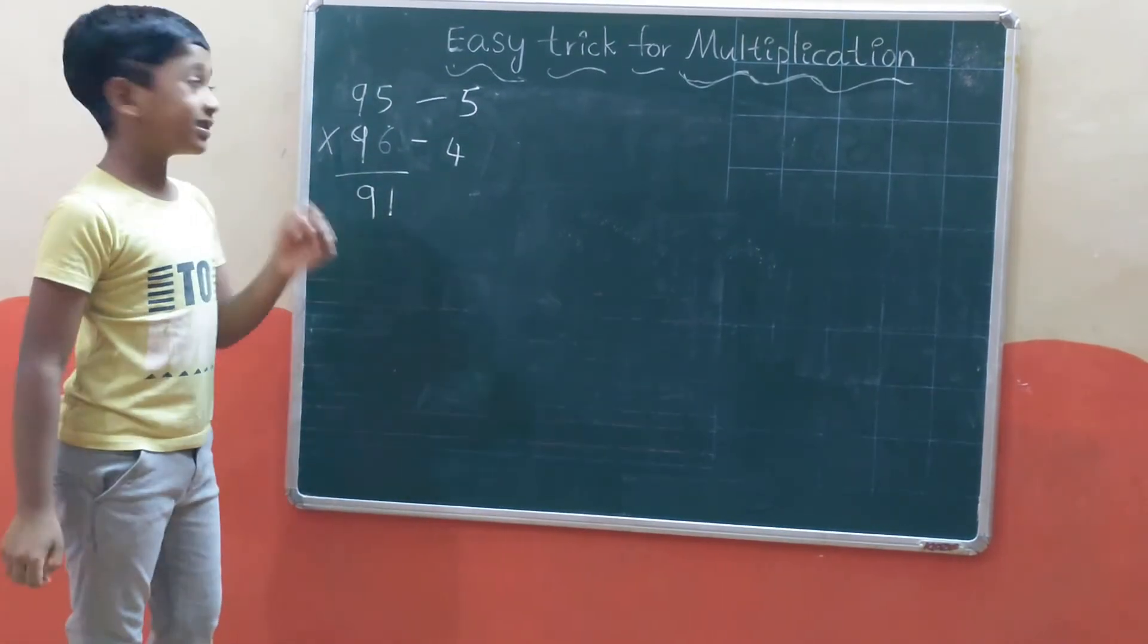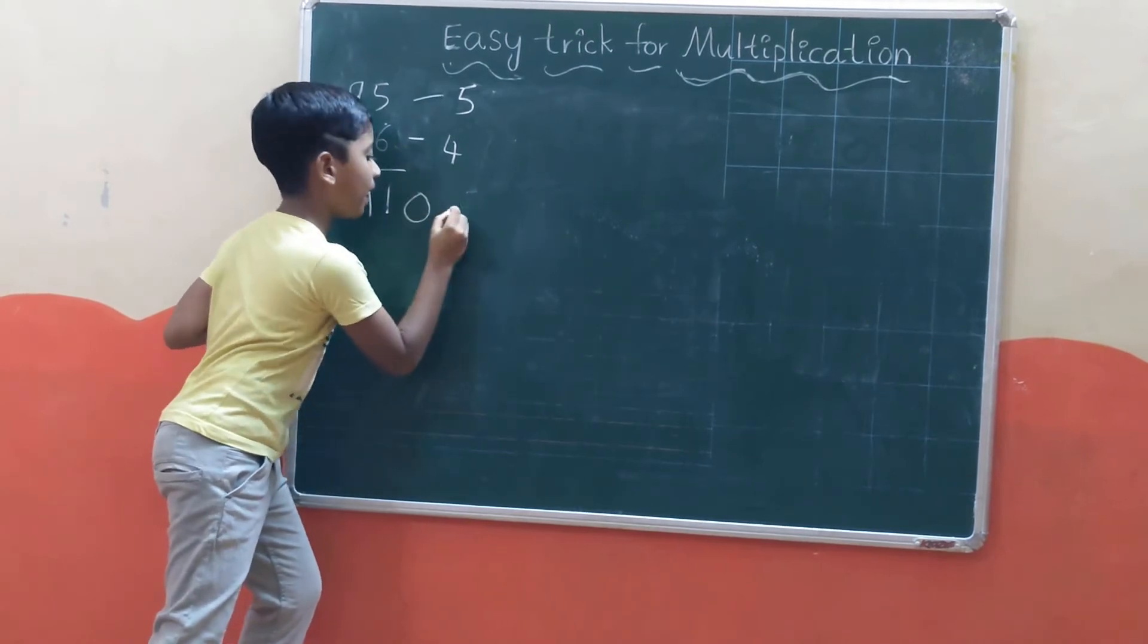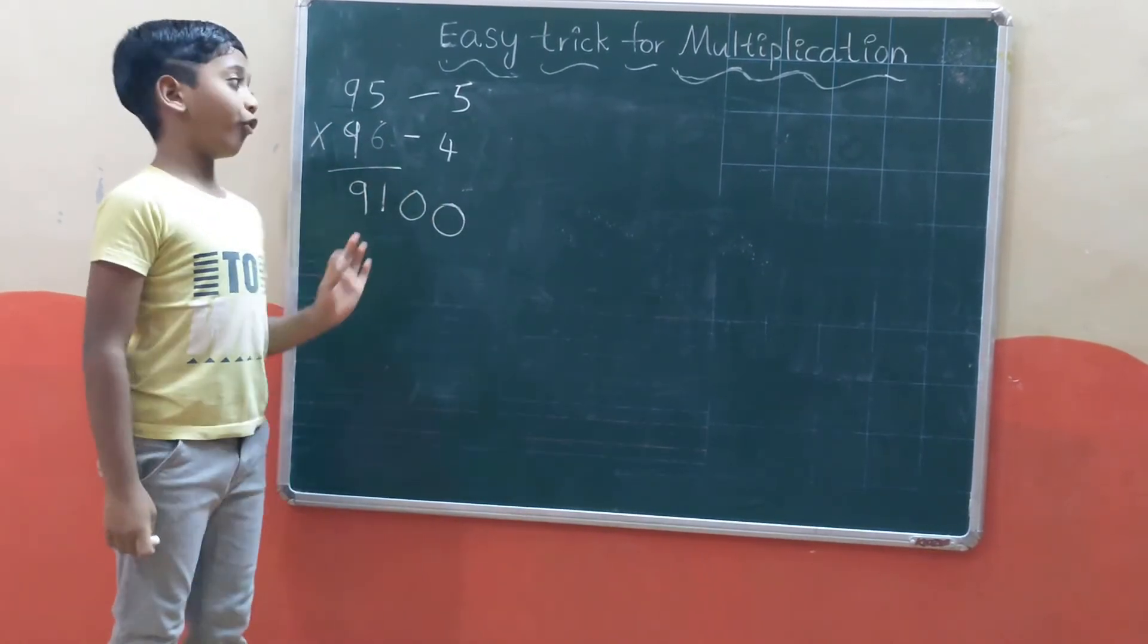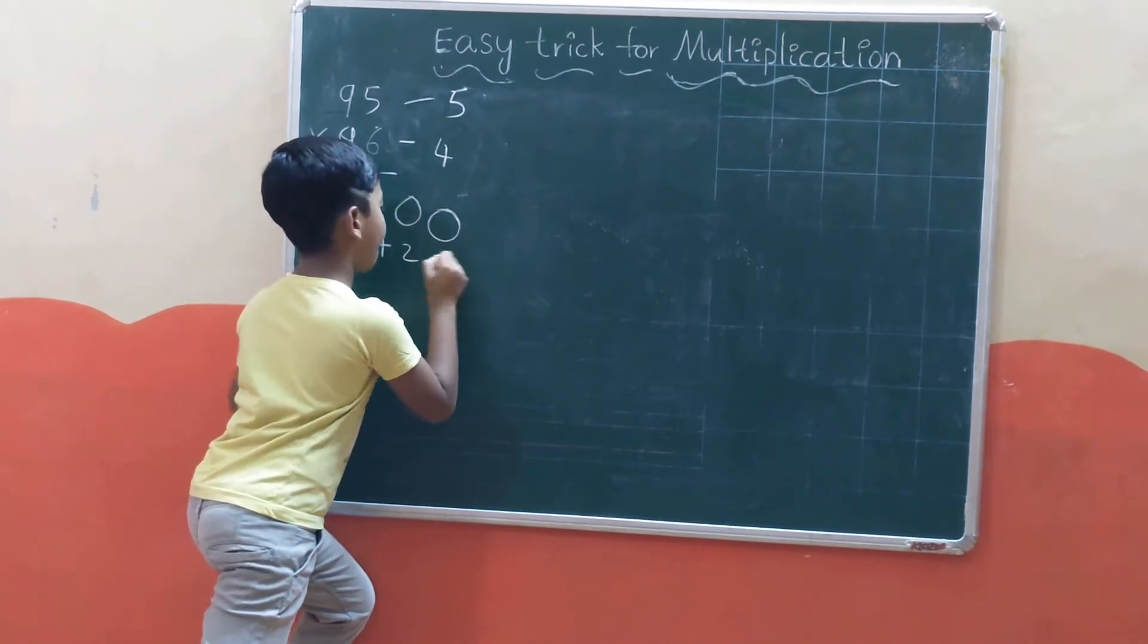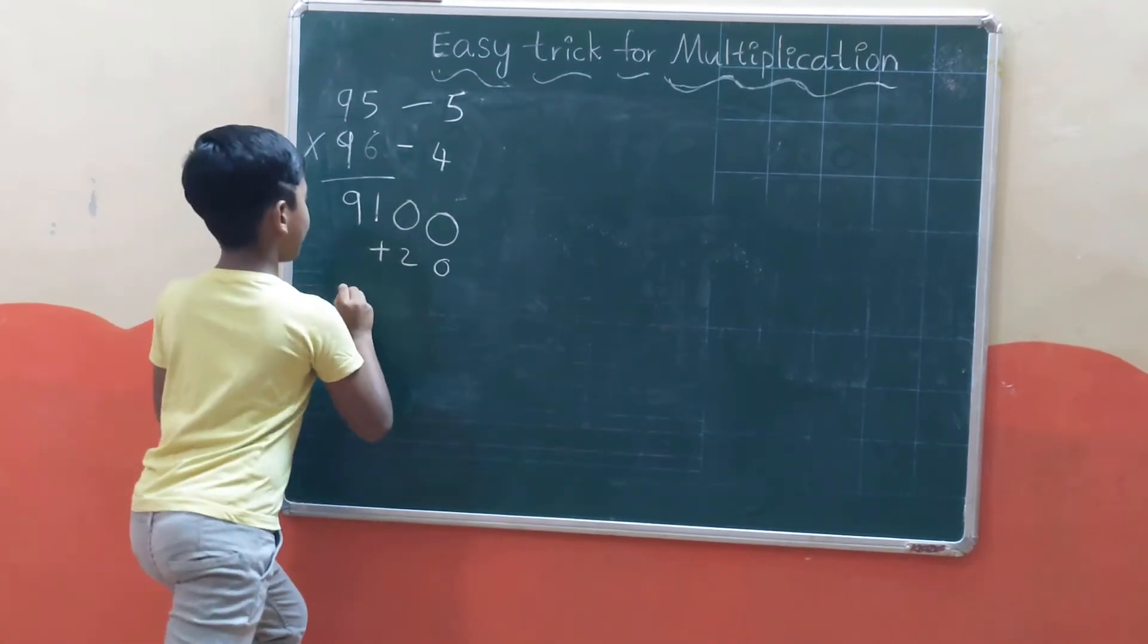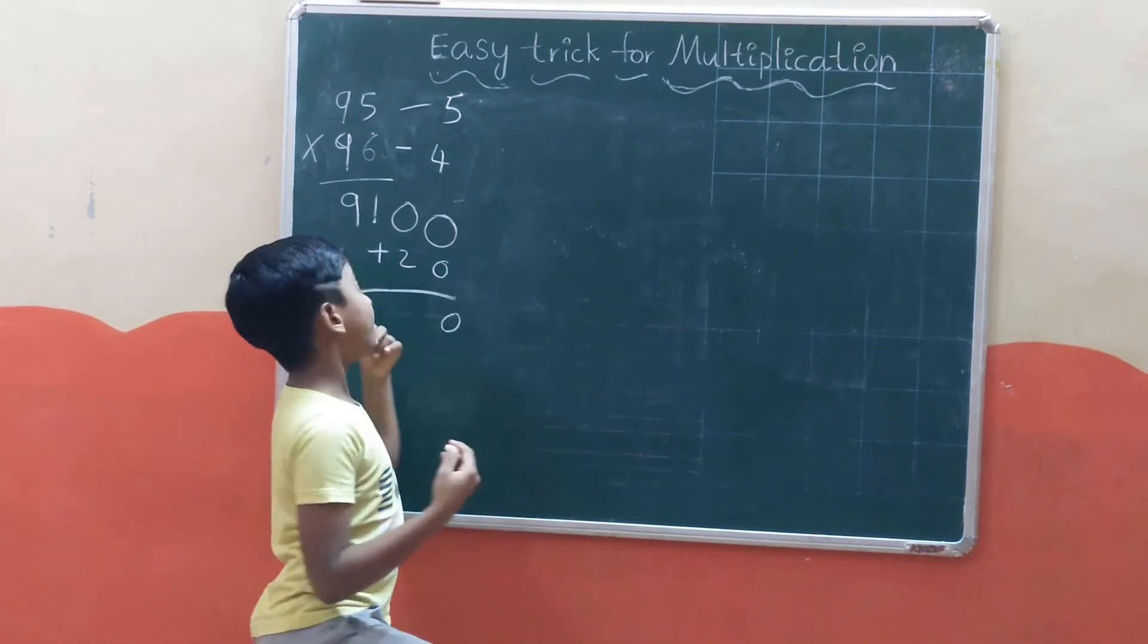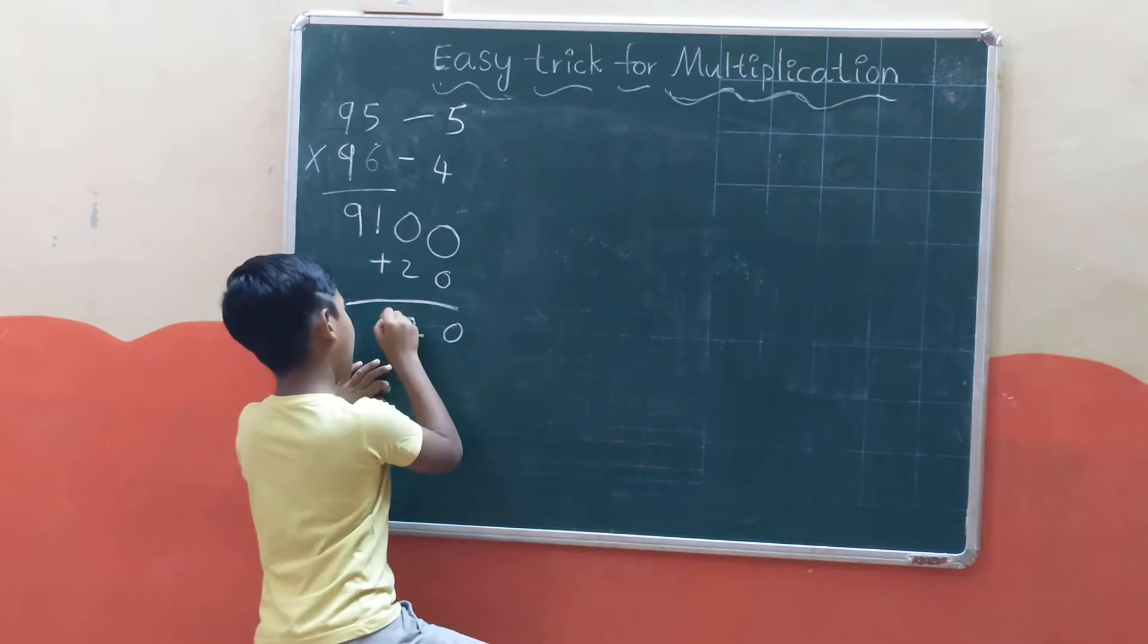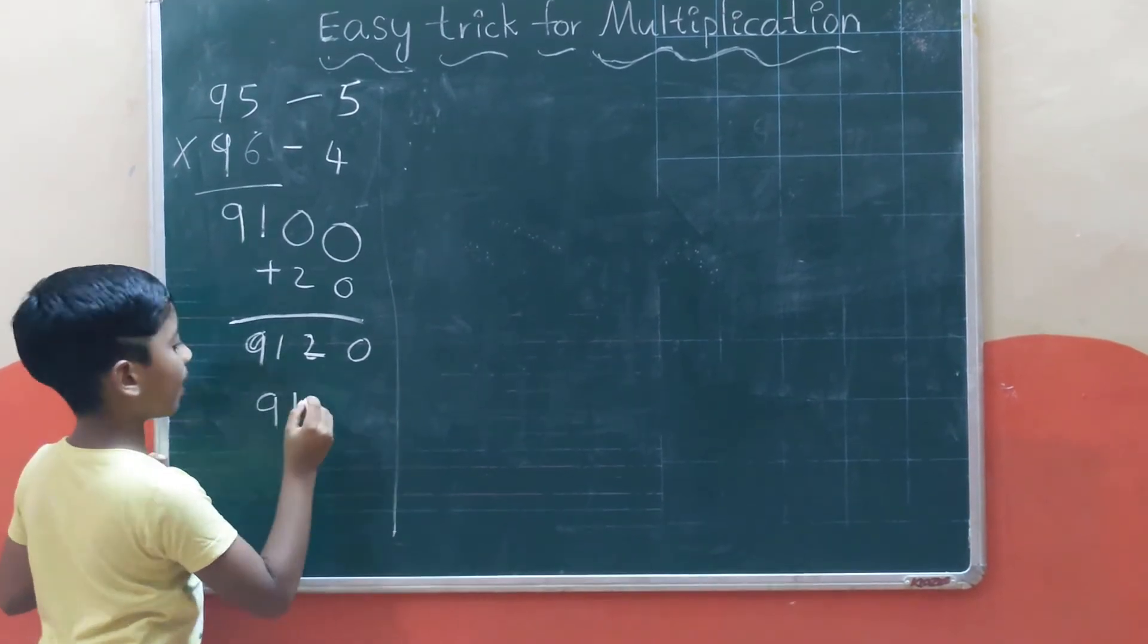Now we multiply the differences. 5 times 4 is 20. We write 20. Then 0 plus 0 is 0, and 0 plus 2 is 2. Finally, 9 and 1 gives us the answer: 9120.